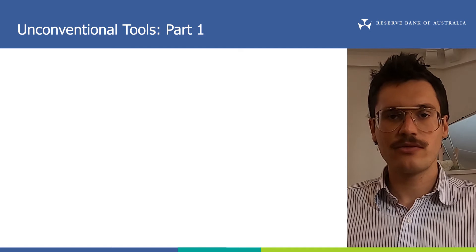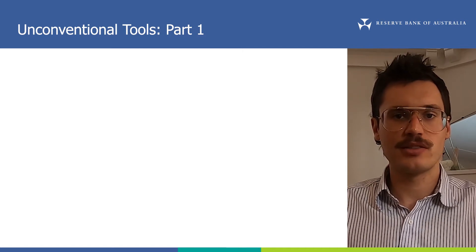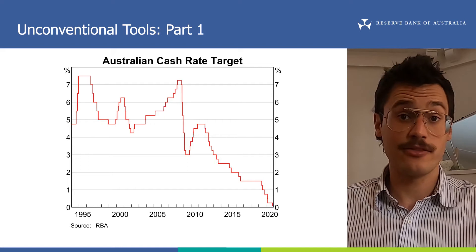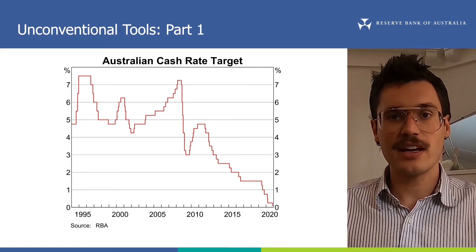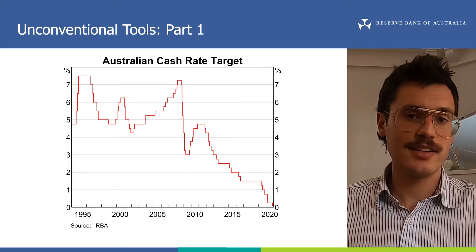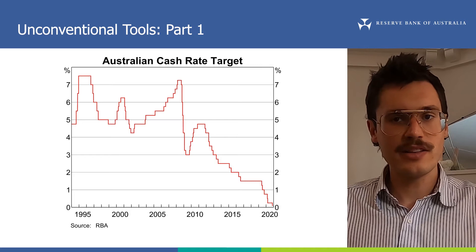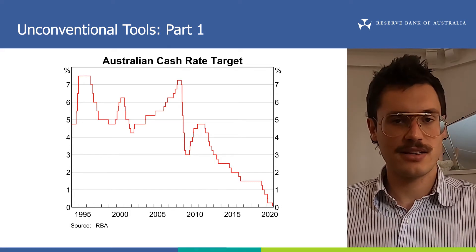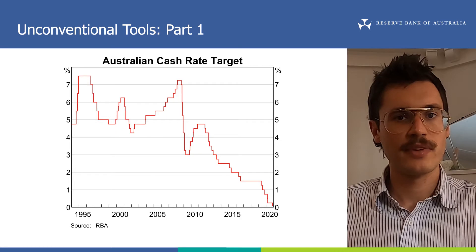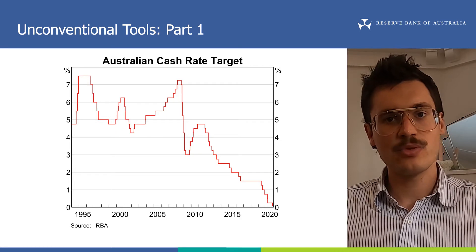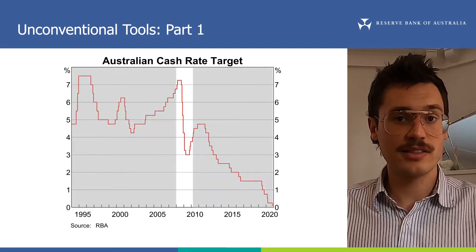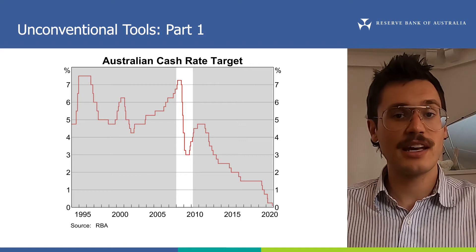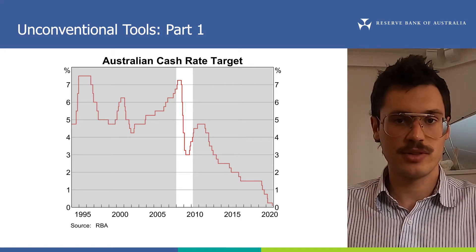So first off, why do we need to use other monetary policy tools? Why isn't the target for the cash rate enough? This chart shows the cash rate target since the early 1990s. Over this period, the RBA mostly did just use the cash rate target to conduct monetary policy. For example, in response to the global financial crisis in 2008, you can see the RBA lowered the cash rate by around 4 percentage points.